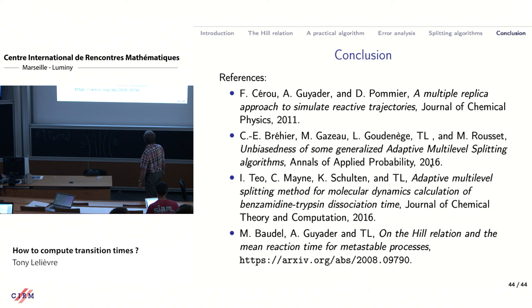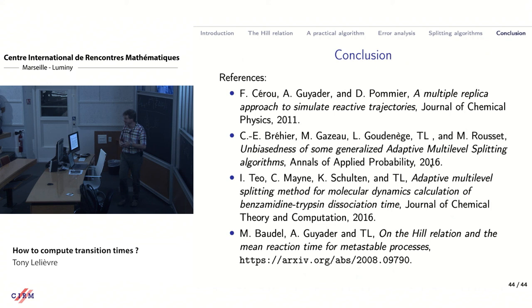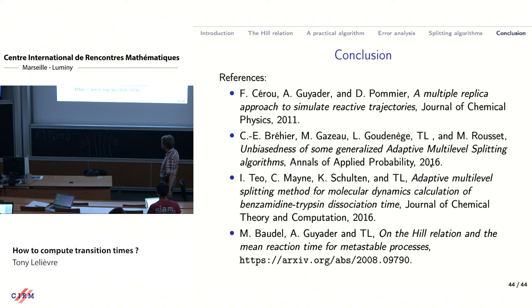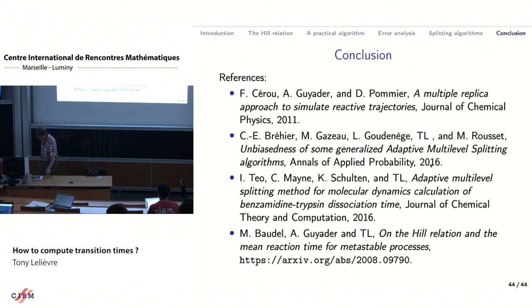This is a joint work with Ivan Teo and Chris Mayne from the NAMD group of Klaus Schulten in Illinois. We were able to estimate this transition time with a reasonable error in a total computational time four orders of magnitude smaller than what would have been needed with naive direct simulation. These are a few relevant papers: one on the Hill relation for computing mean reaction times, and one on the unbiased estimator of the rare event probability using the splitting technique. Thank you for your attention.